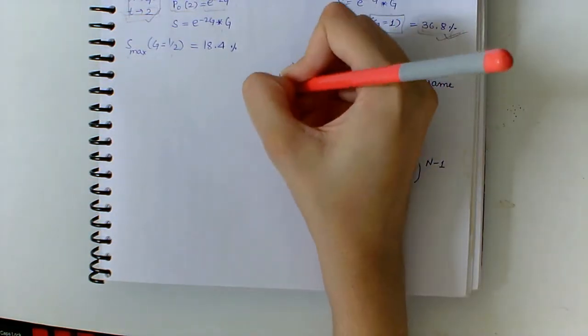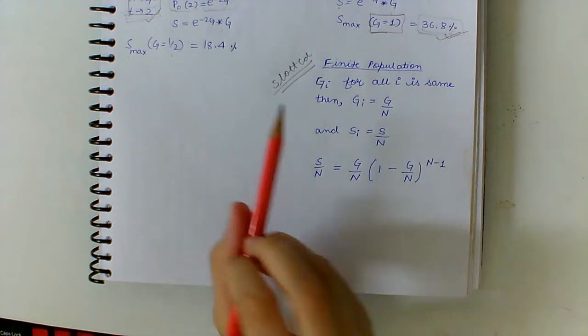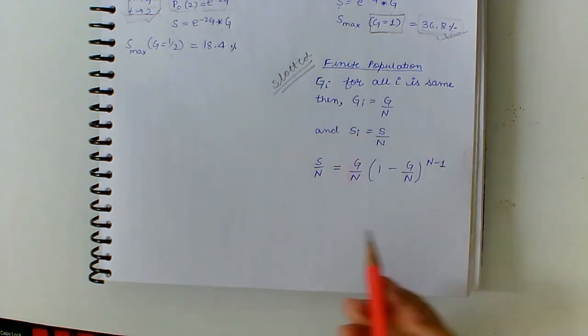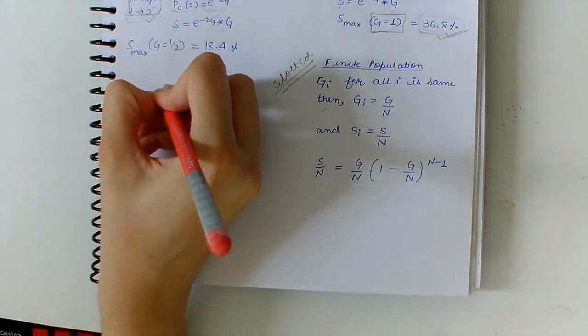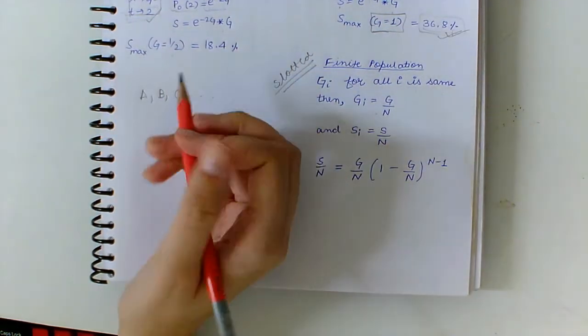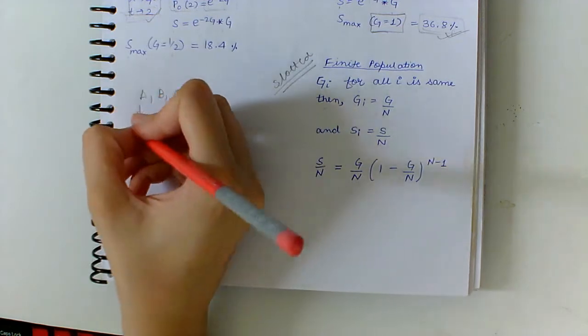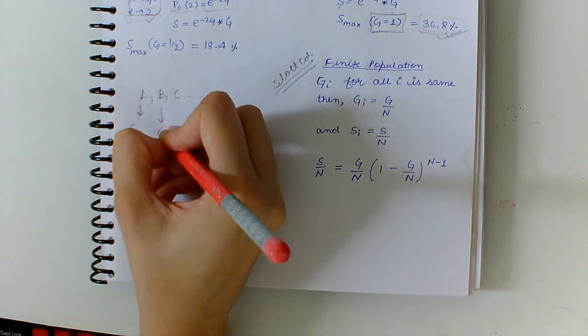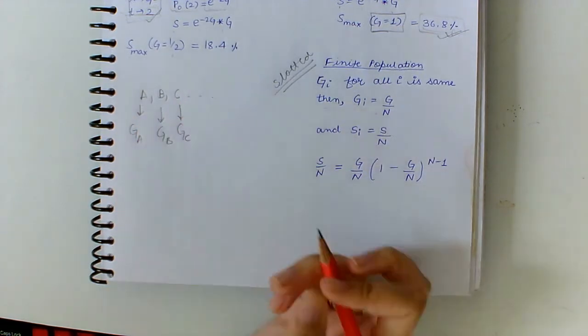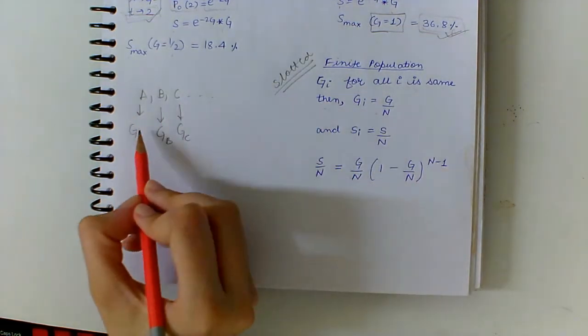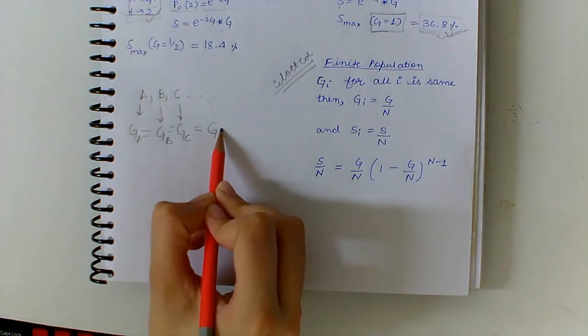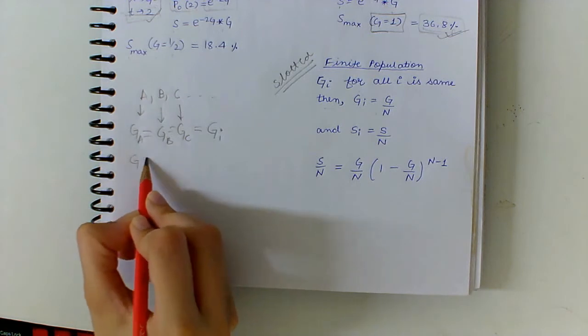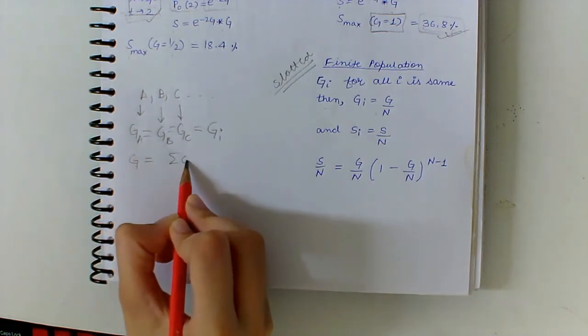Now moving on to finite population Slotted ALOHA. Here, let us assume that gi for all i is the same. So for A, B, C, and so on, their mean number of frames they need to transmit per frame time is given as this, and we assume that all of them are equal and are equal to gi.